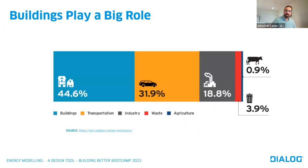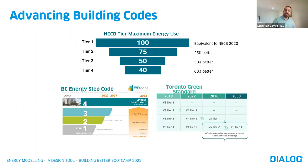In Ontario specifically, we know that the largest source of emissions is through the built environment, including both existing and new construction. As a result, policy and standards like the BC Step Code and the Toronto Green Standard have been developed and continue to increase their requirements for new construction. At a federal and provincial level, the development of the new NECB 2020 energy standard is really aimed at driving design continuously towards more efficient buildings with specific tier approaches.